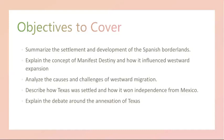The 19th century settlement of Texas marked a pivotal chapter in American history. It began when American pioneers, referred to as Texans, moved into Mexican-controlled Texas. As more settlers arrived, tensions between the Texans and Mexican authorities increased, fueled by disagreements over issues like slavery and local autonomy.